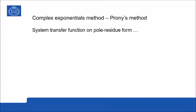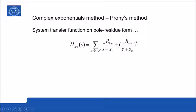To start with, we consider the system transfer function in the pole-residue form. That is, we treat the system transfer function as a sum of contributions from the modes, with complex conjugate pairs of terms with the residues in the numerator and the poles in the denominator.